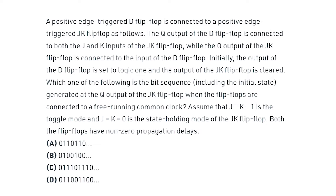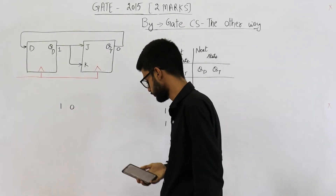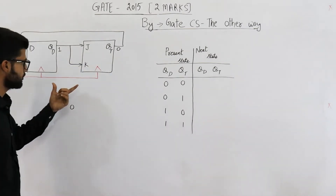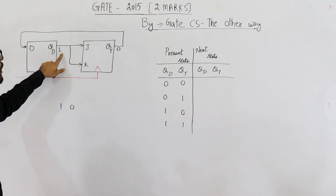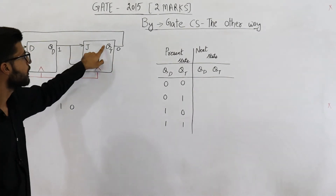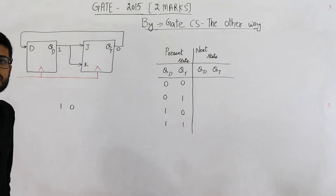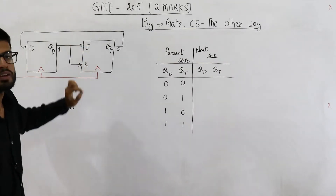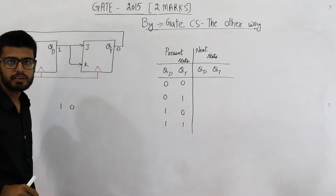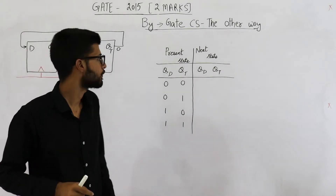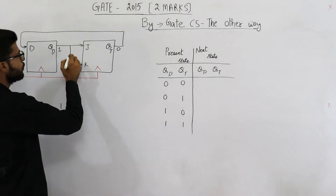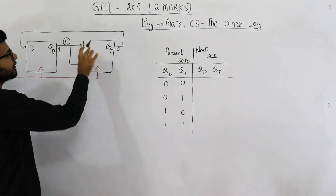Both flip-flops have non-zero propagation delays. I am naming the D flip-flop output as QD and the JK flip-flop output as QT. Why QT? Because whenever both J and K are connected to each other, the JK flip-flop behaves as a T flip-flop. Whatever is connected to both J and K becomes the T input of this T flip-flop.